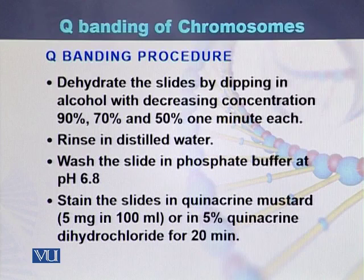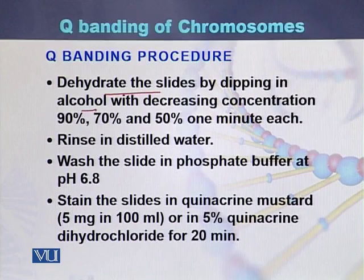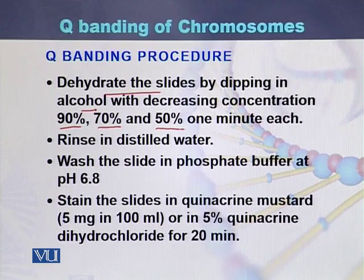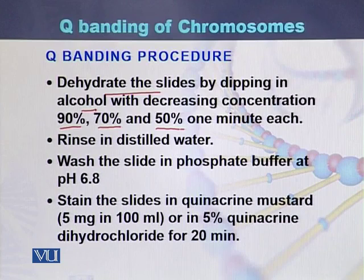This is the procedure for how we stain the chromosomes while performing Q banding. The slides are dehydrated by dipping in alcohol with decreasing concentration — first 90 percent, then 70 percent, then 50 percent — one minute for each step.